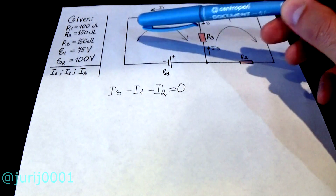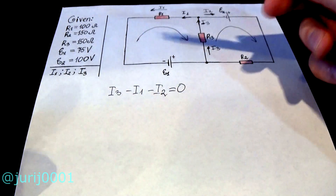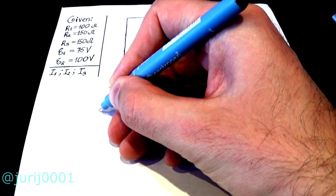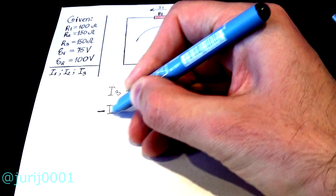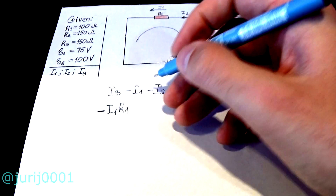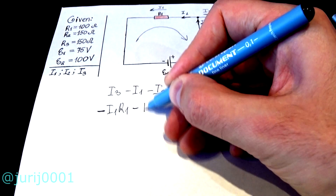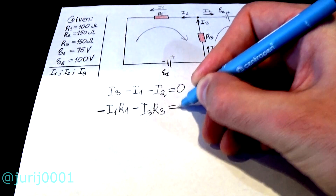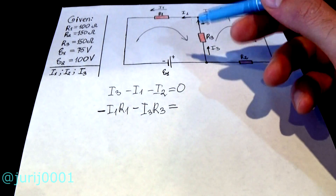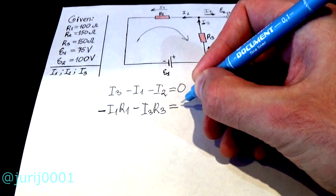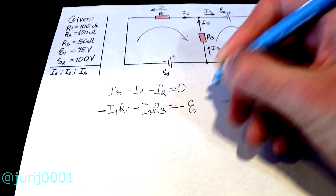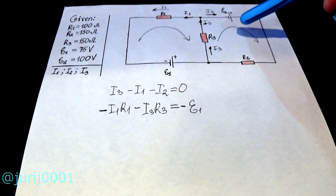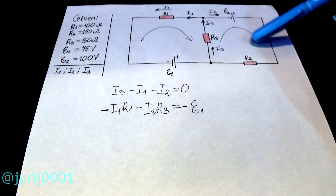The primary circuit — let it be on the left. The current strength is opposite to the loop bypass direction, so we put a minus sign. We are going downhill, so we have to put a minus sign in front of the EMF. In the second contour on the right, the direction of the current coincides with the direction of the contour bypass.